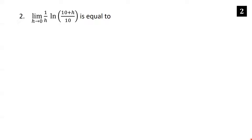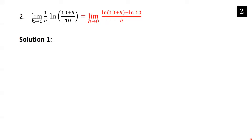Now we evaluate the limit as h goes to zero of (1/h) · ln((10+h)/10). The first method is to recognize it as a derivative. Using the logarithm rule, we rewrite ln((10+h)/10) as ln(10+h) − ln(10). Multiplied by 1/h, this is the same as putting the whole thing over h — you may already recognize this as a derivative.